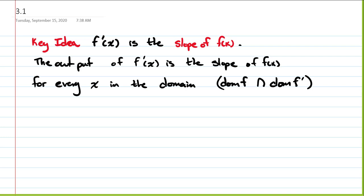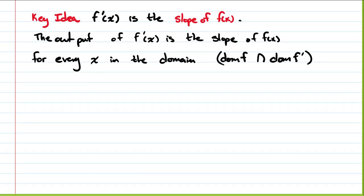If f and f prime both exist at a point x, then f prime of x tells us the slope of f of x at that point. In algebra, we were only able to find the slope of lines. Using the derivative, as we talked about in chapter 2, we can now find the slope of any function whose two-sided limit exists at that point of the difference quotient. So that's what we built in chapter 2.